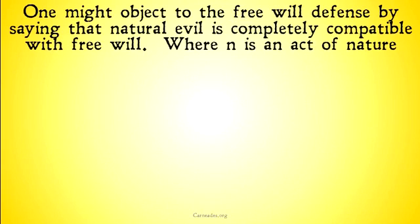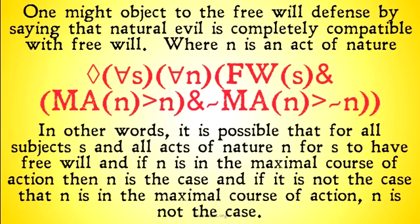Now, one might object to the free will defense by saying that natural evil is completely compatible with free will. Where N is an act of nature, one might say it's possible that for all subjects S and all acts of nature N, for S to have free will, and if N is in the maximal course of action then N is the case, and if it's not in the maximal course of action then N is not the case. So you can have free will and all natural obligations — all the maximal good that the world could do — fulfilled. This is a problem for the free will defense, because the only kind of evil it can explain away is evil talking about human choice and human action.